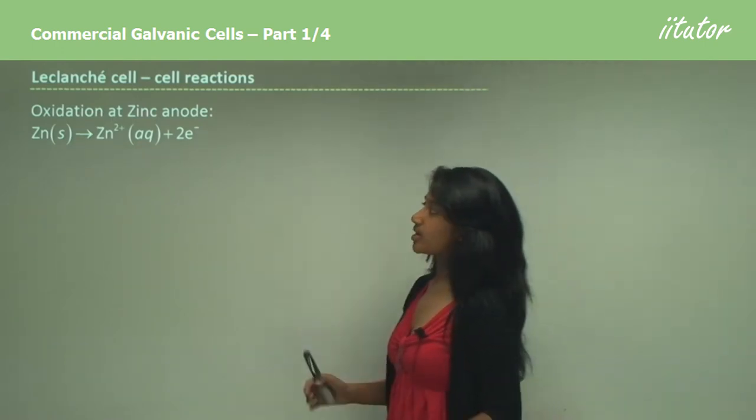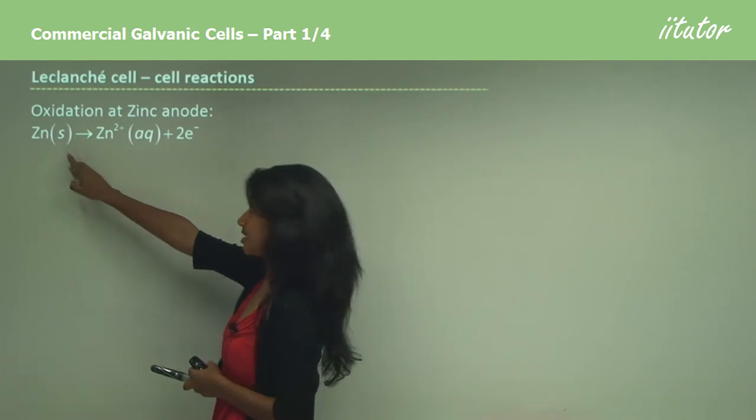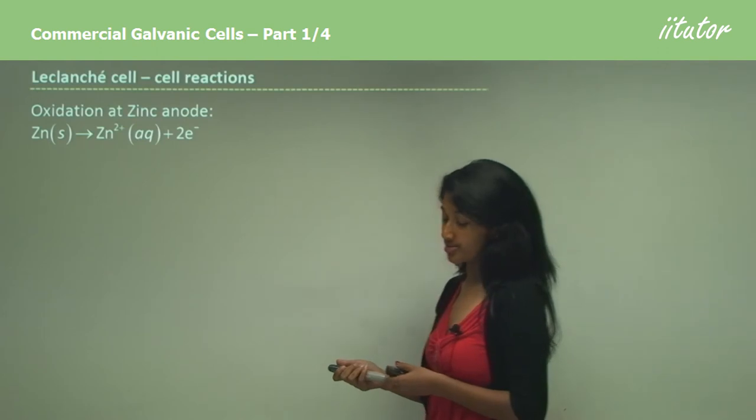So we'll take a look at the oxidation reaction. The zinc, which is a solid casing, is turned into zinc ions and it loses two electrons in the process.